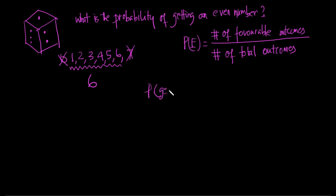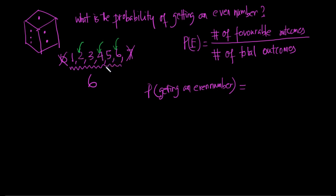Probability of getting an even number equals number of favorable outcomes divided by total outcomes. The even numbers on a dice are 2, 4, and 6 — so the favorable outcomes are 3. The total outcomes are 6. Therefore, probability of getting an even number is 3/6, which simplifies to 1/2.